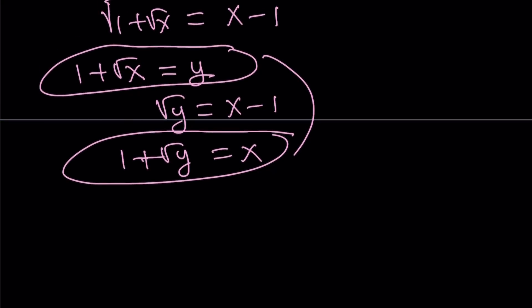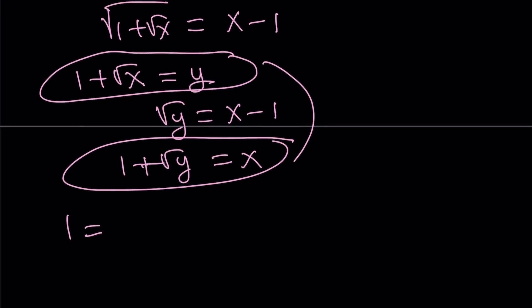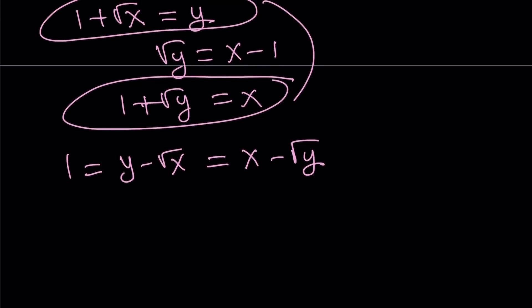So how do you solve this system? By subtracting these two equations. The motivation is it'll make it factorable, and we can also get rid of 1. You can isolate 1 from each equation: from the first equation, 1 can be written as y minus square root of x; from the second equation, 1 can be written as x minus square root of y. So now you get a single equation. We had a single variable, turned it into two variables, got a system, and then turned it back into an equation. This problem has a golden flavor to it.